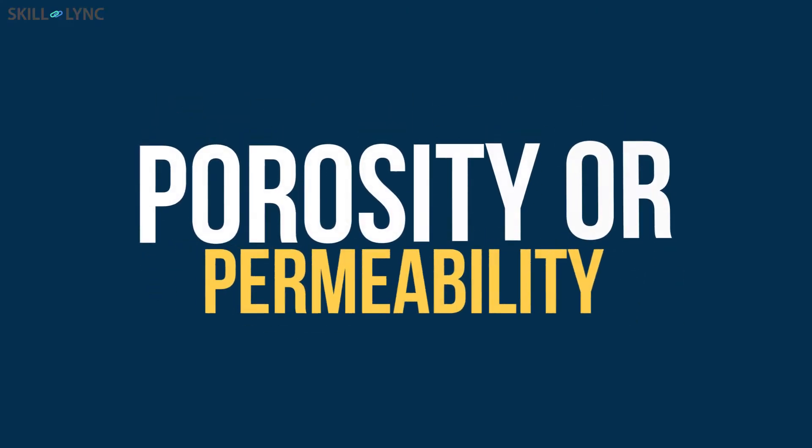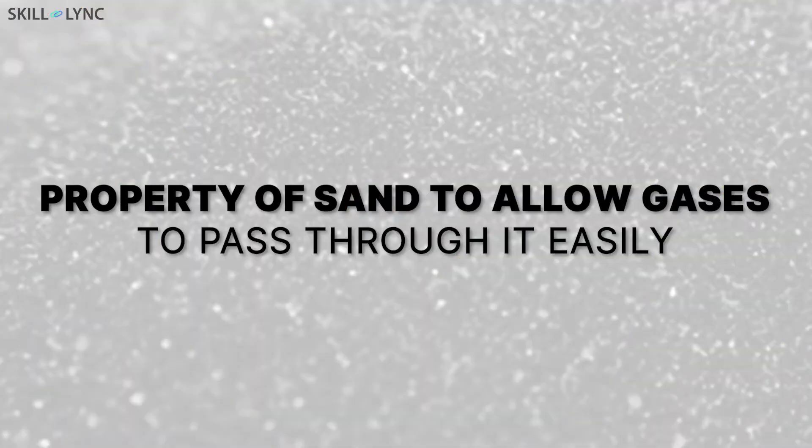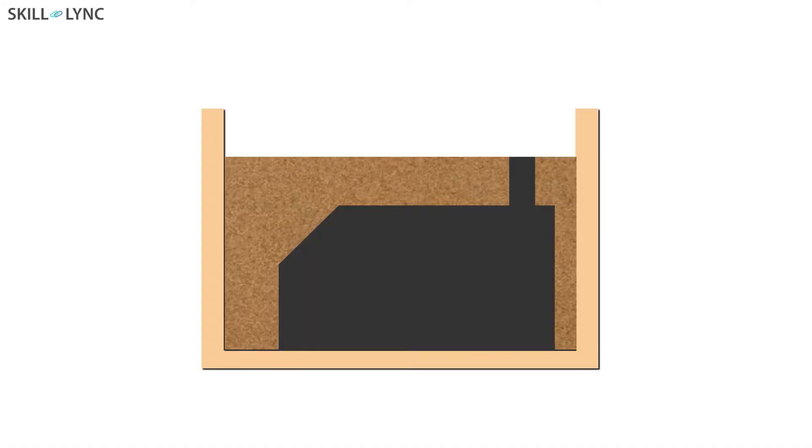The first and most basic property of molding sand is porosity. Also known as permeability, it is a property of sand to allow gases to pass through it easily. As the molten metal is poured into the cavity, some gases dissolve in molten metal and also enter the cavity.